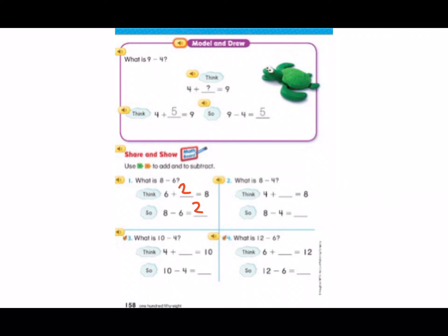Number 2. What is 8 minus 4? Four plus four equals eight, so 8 minus 4 equals 4. Number 3. What is 10 minus 4? Think what number do I need to add to 4 to equal 10? Six, so that means 10 minus 4 equals 6. Number 4. What is 12 minus 6? Think what number do I add to 6 to equal 12? Six, that's right, it's one of our doubles facts so that means 12 minus 6 equals 6. Great job, remember you can always pause and play the video as needed.